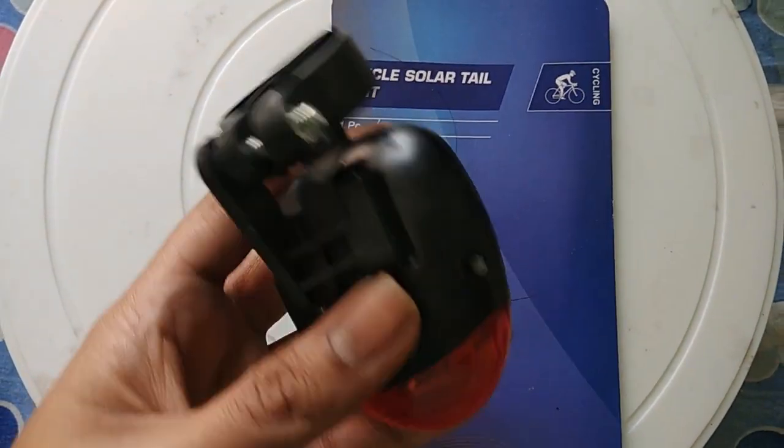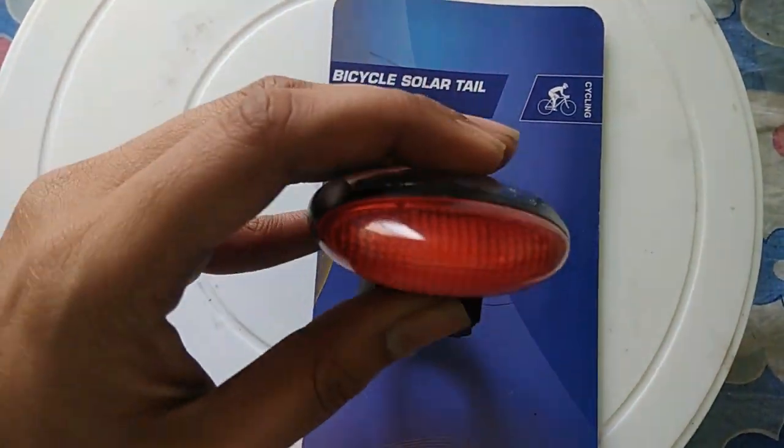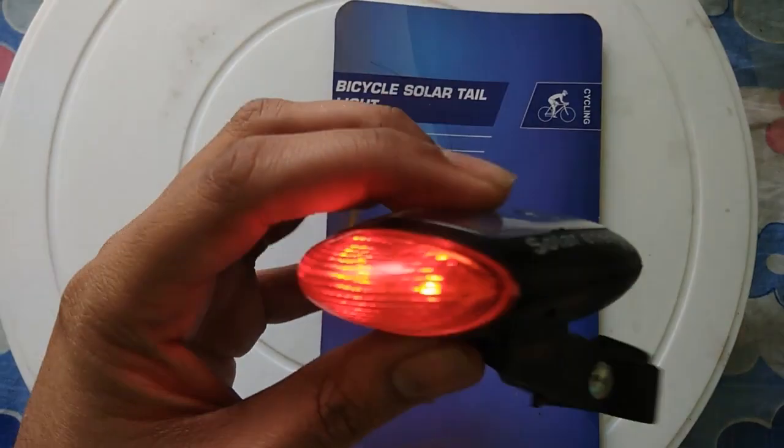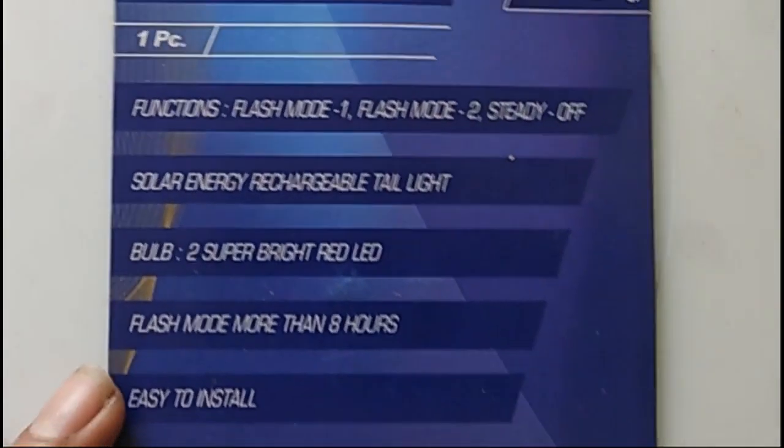One problem of cycling is during the night. I don't have any headlights or any tail light. So how can other vehicles see me when the road is very much dark?